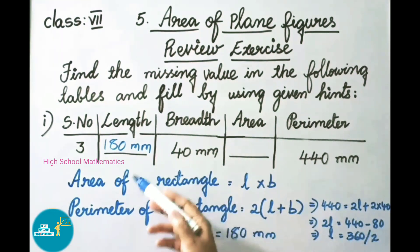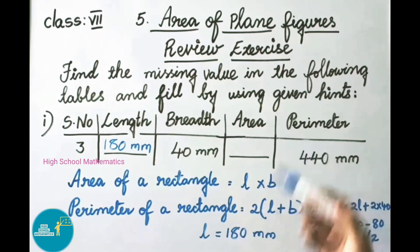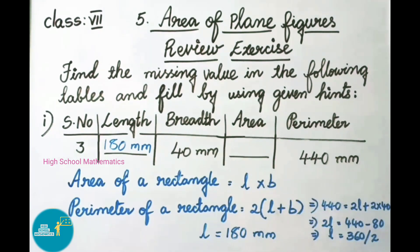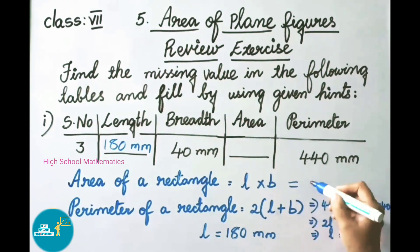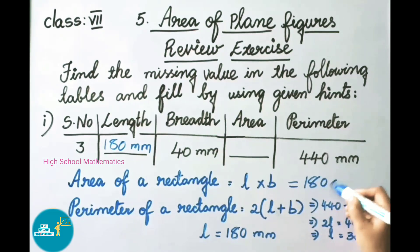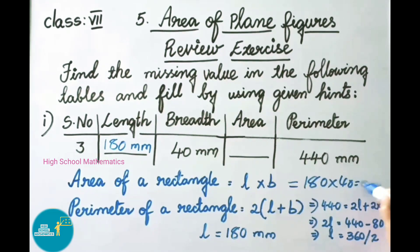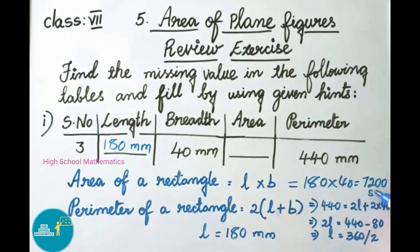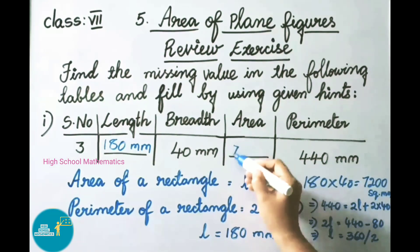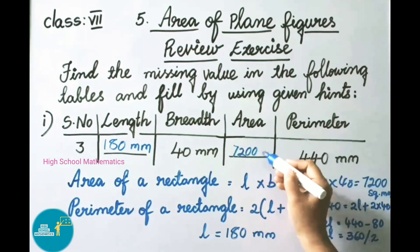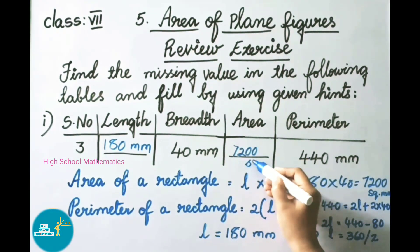Now we have length and breadth. Area of rectangle = length × breadth = 180 × 40 = 7200 square millimeters. So the answer here is 7200 square millimeters.